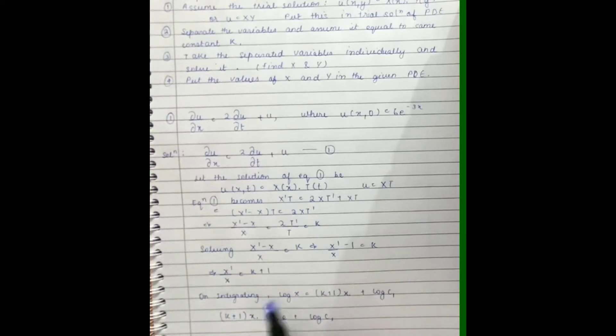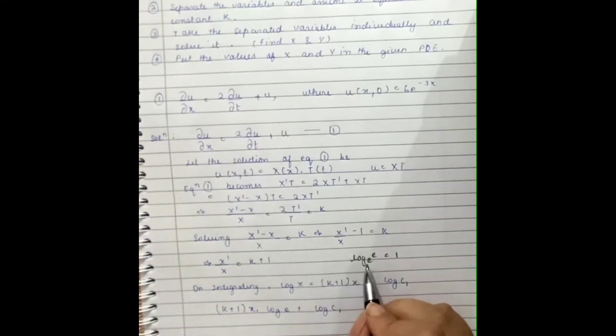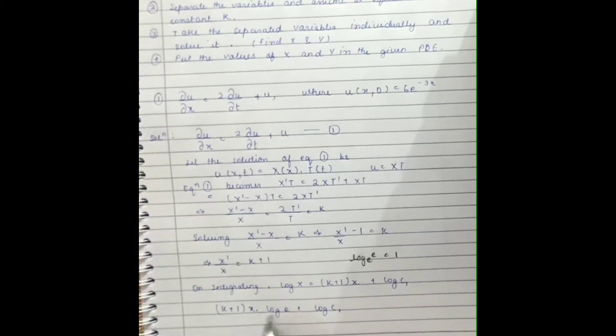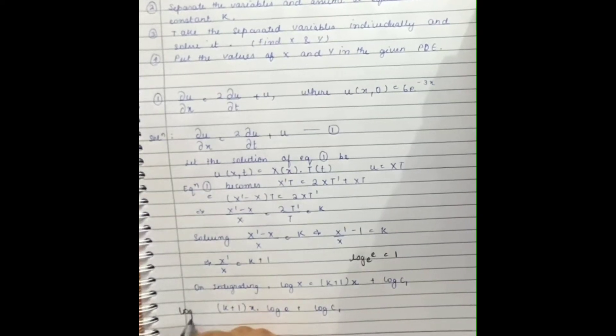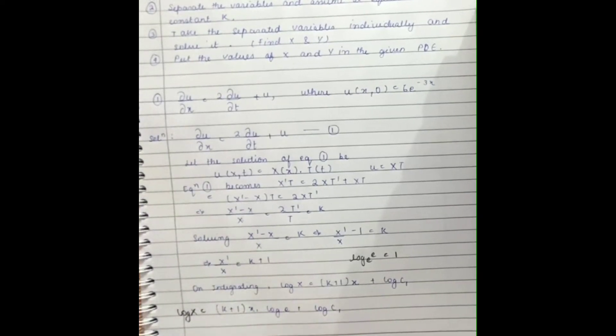Which will be equal to X'/X - 1 = k. On integrating we will get log X = (k+1)x + log c₁, which is a constant here. As we know, log base e equals 1, so we are writing it like log X = (k+1)x·log e + log c₁.